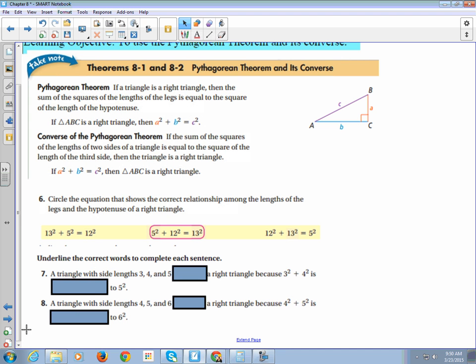Alright, so let's look at these sentences. A triangle with side lengths 3, 4, and 5 is a right triangle because 3 squared plus 4 squared is equal to 5 squared.